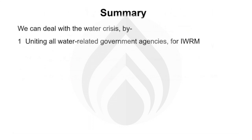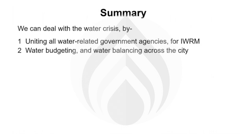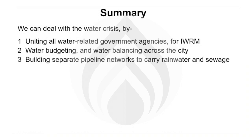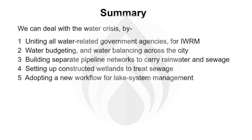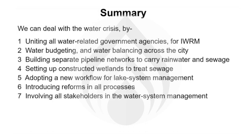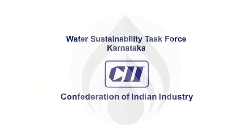To sum up, we can deal with the water crisis by: uniting all water-related government agencies for integrated water resource management; water budgeting and water balancing across the city; building separate pipeline networks to carry rainwater and sewage; setting up constructed wetlands to treat sewage; adopting a new workflow for lake system management; introducing reforms in all processes; and involving all stakeholders in water system management.